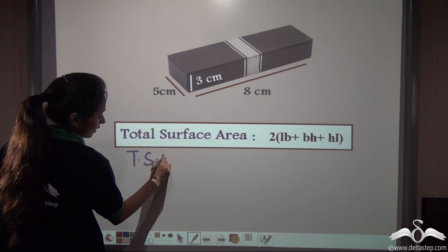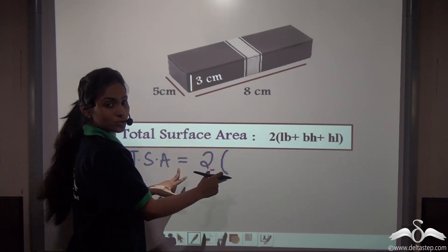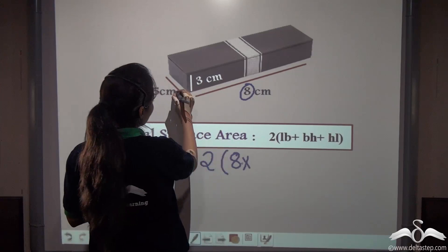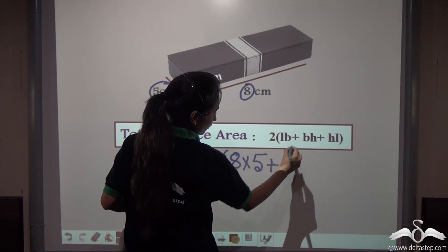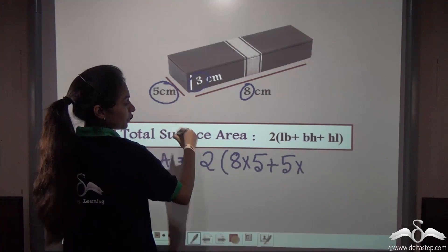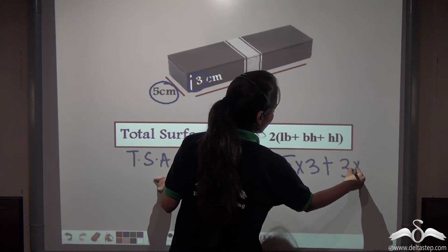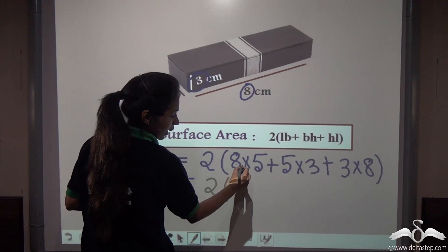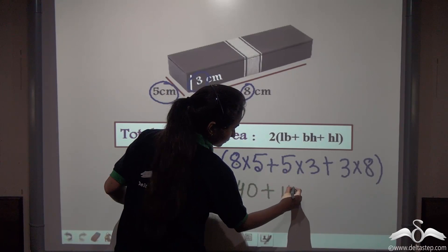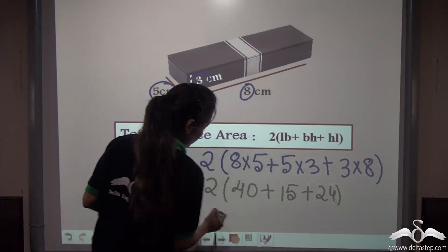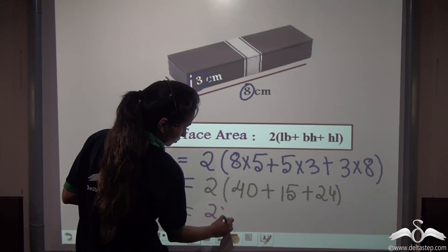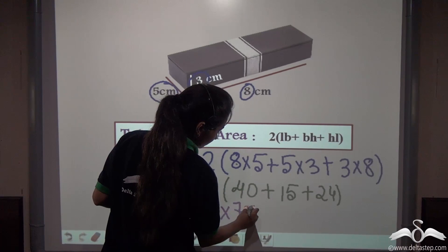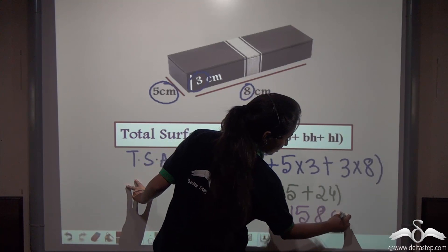The total surface area is equal to 2 times, substituting the values: L is 8 centimetres, B is 5 centimetres, and H is 3 centimetres. So that is 2 times (8×5 + 5×3 + 3×8). Eight fives are 40, five threes are 15, and eight threes are 24. So we get 2 times (40 + 15 + 24) = 2 times 79, which gives us 158 centimetre square.